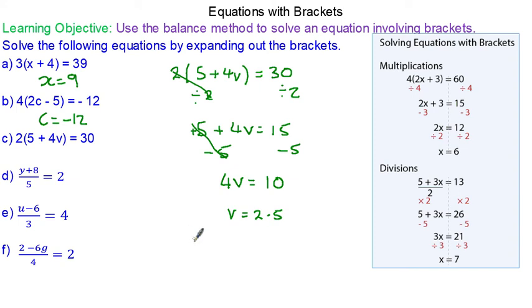And we can check that this works. Because 2 lots of 5 plus 4 times 2.5 which is 10. 2 lots of 15 does make 30.